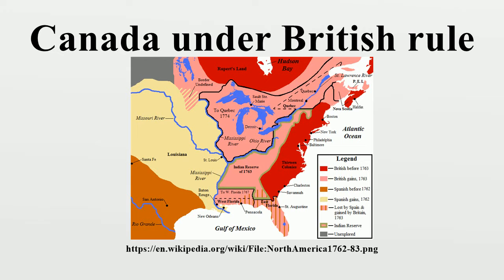Following Confederation, the Dominion of Canada itself also remained part of the British Empire and was constitutionally subject to imperial control until the enactment of the Statute of Westminster in 1931. The Statute of Westminster gave the Dominion legislative sovereignty on all matters except with regards to the constitutional laws of Canada, which remained under the legal control of the Parliament of the United Kingdom. Canada's final vestige of legal dependence on the United Kingdom was terminated in 1982 with the enactment of the Canada Act, which transferred control of the Constitution over to the country.